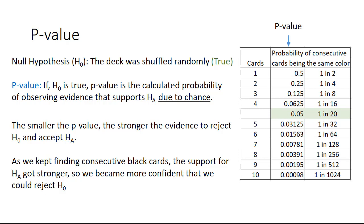As we kept finding consecutive black cards, the support for the alternate hypothesis got stronger. So we became more confident that we could reject the null hypothesis, even though the null hypothesis was true.